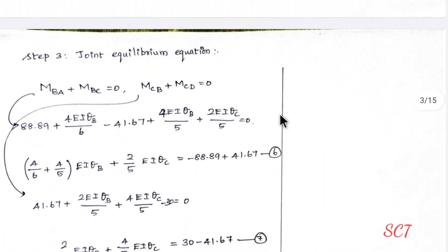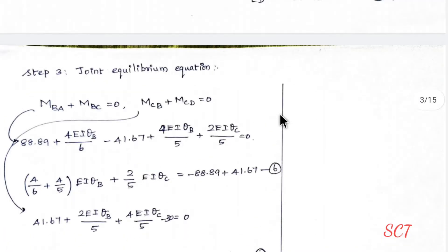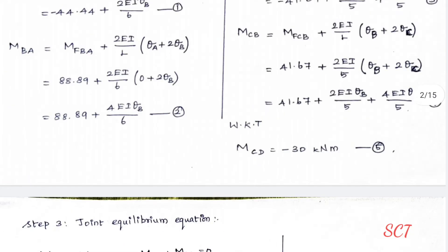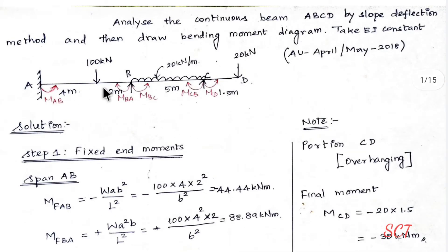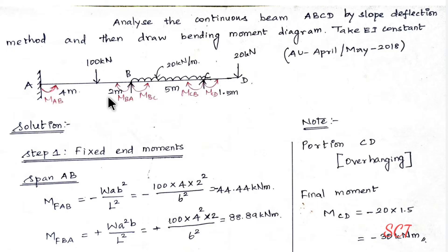Now we apply the joint equilibrium equations at joints B and C. Joint A is fixed, so it is not a free joint. At joint B, the sum of moments equals zero, and at joint C, the sum of moments equals zero.